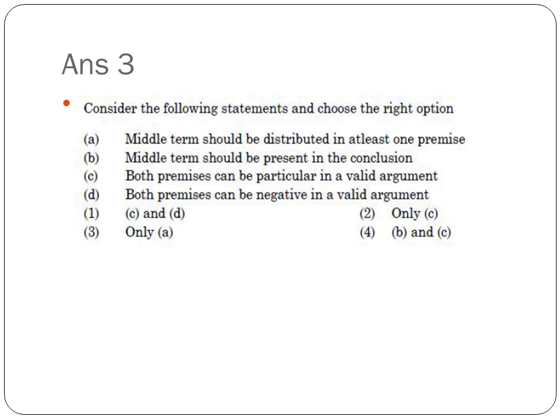Third question: Consider the following statements and choose the right option. This comes under premises, argument, and conclusion. Options: Middle term should be distributed in at least one premise — you are provided with two premises and go for a conclusion, so the middle term should be distributed. Middle term should be present in the conclusion — no. Both premises can be particular in a valid argument — no. Both premises can be negative in a valid argument — no. So the first option is the right answer.